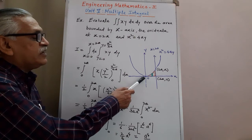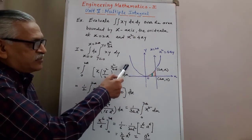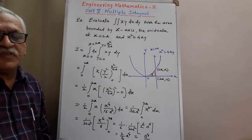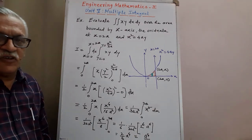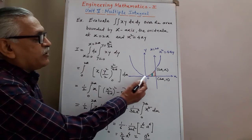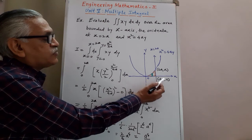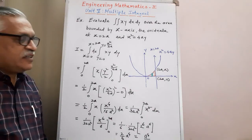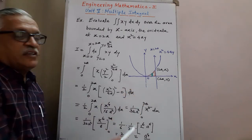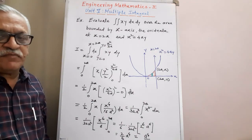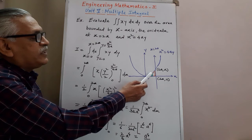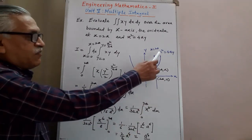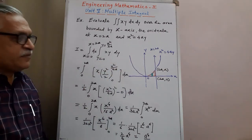Therefore, the required value is a raised to 4 by 3, which is the value of the double integration over the area bounded by the three curves: x-axis, ordinate at x equals 2a, and the curve x squared equals 4ay. To summarize the steps: first, draw the figure; then obtain the required region of integration; find the points of intersection — here they are (0,0), (2a, 0), and (2a, a).